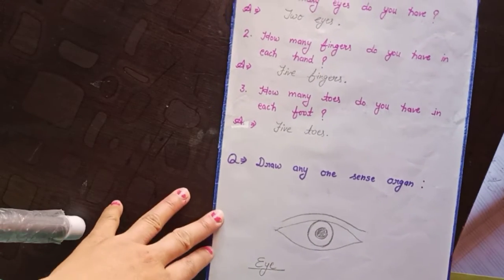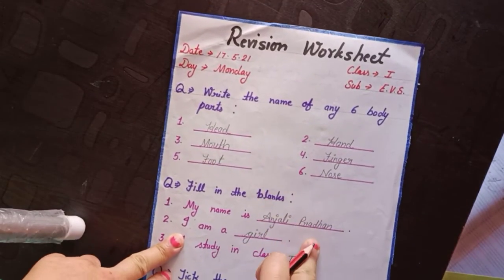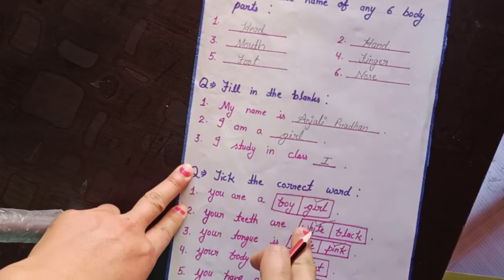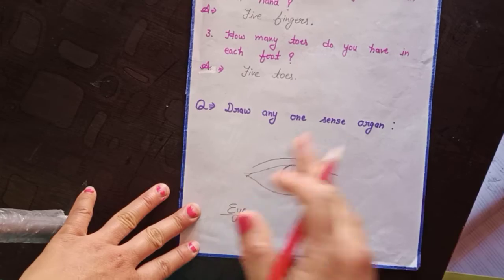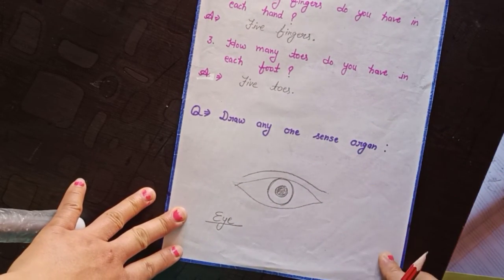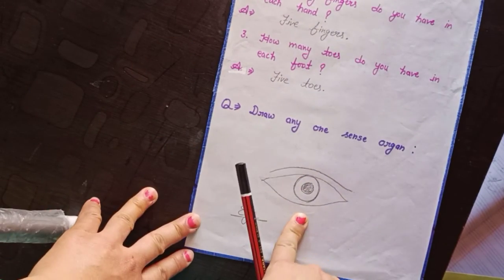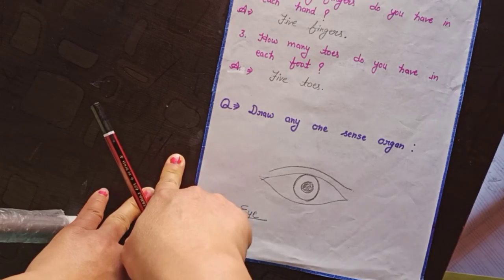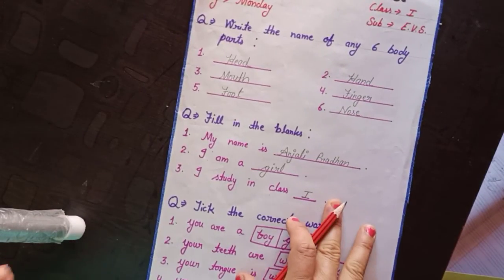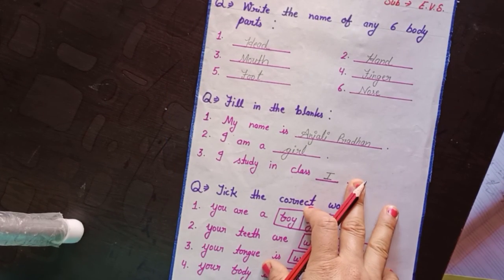So class, you have to do this revision worksheet in your EVS notebook. Note it down in your EVS notebook. Questions go on the lined side of the page, and on the blank portion side, you have to draw the pictures.